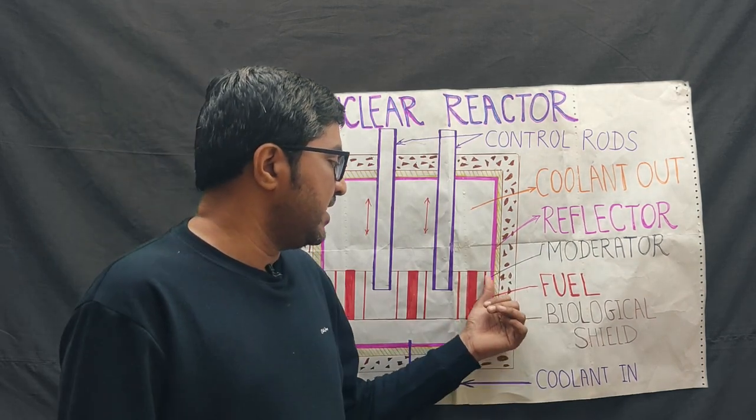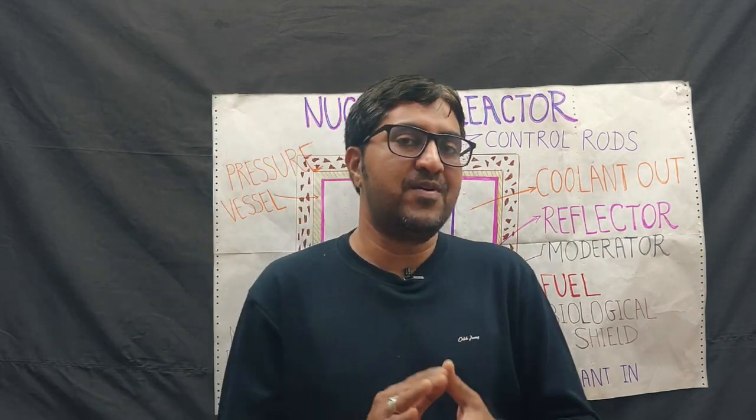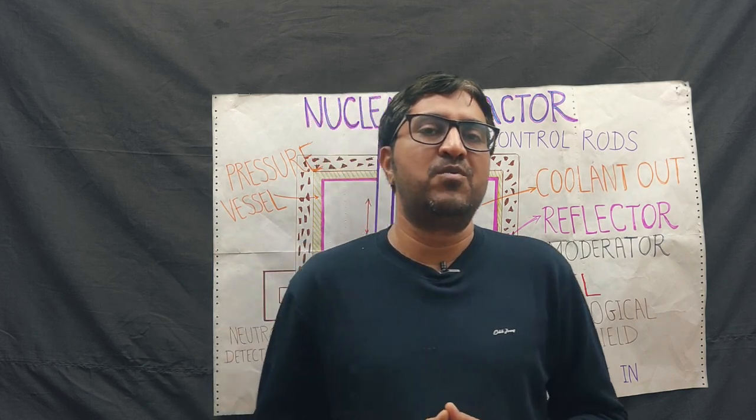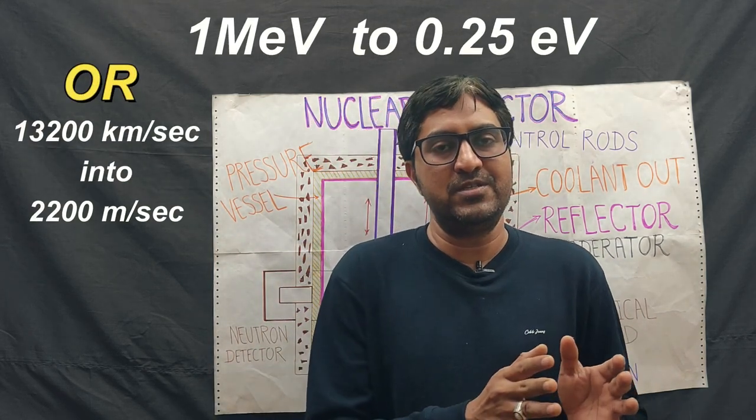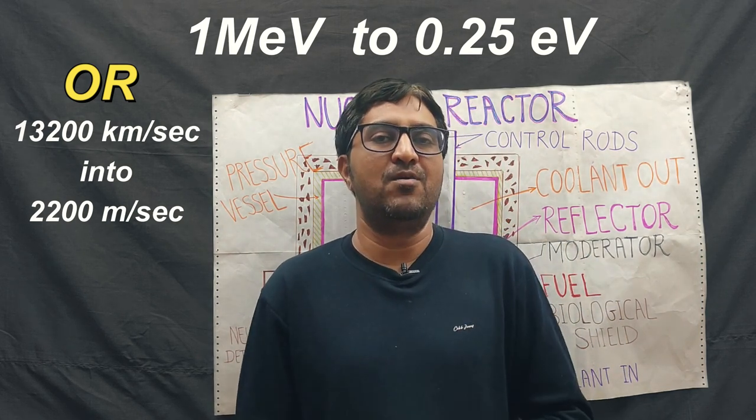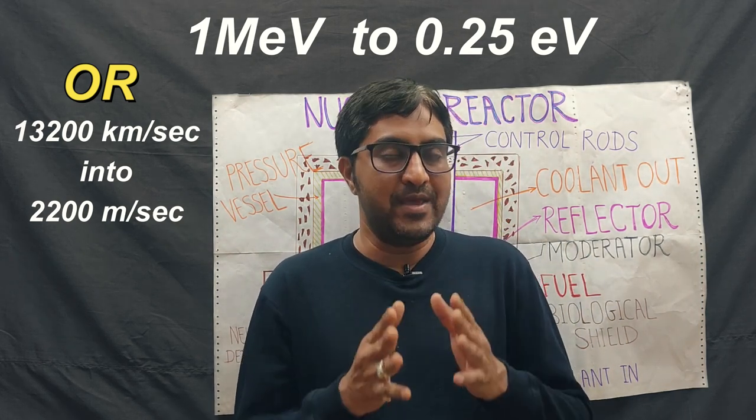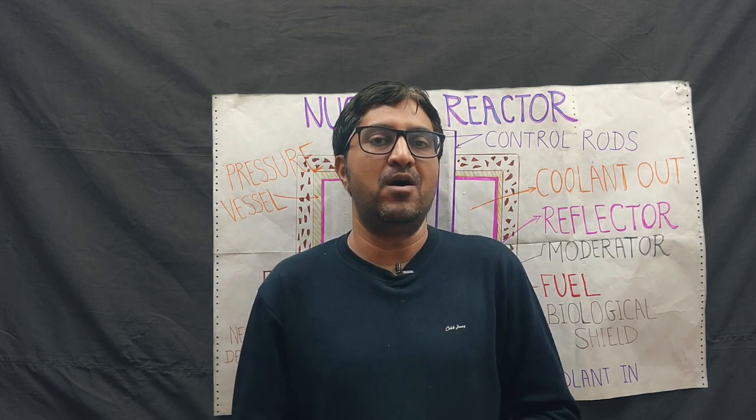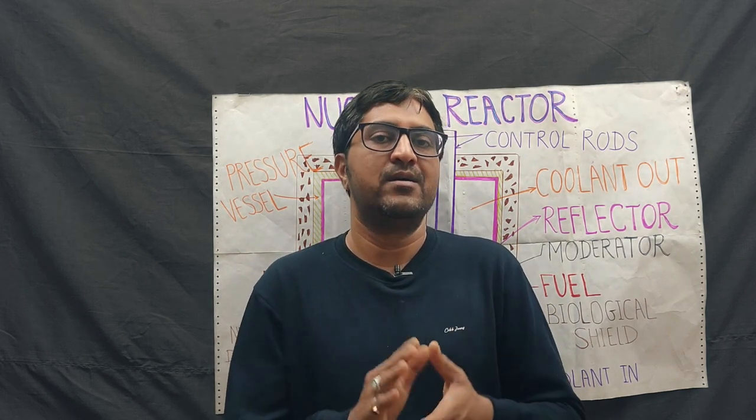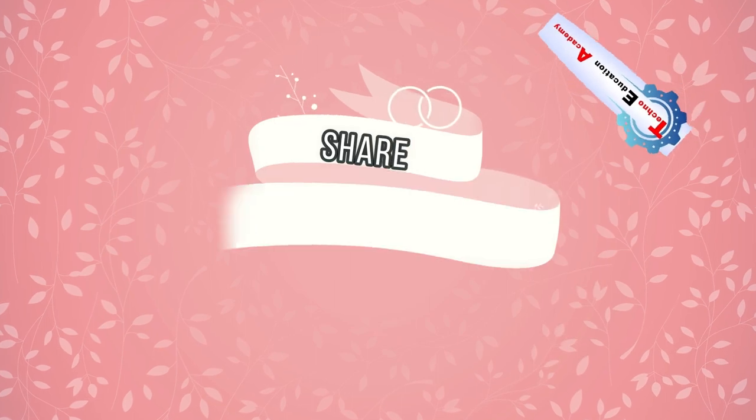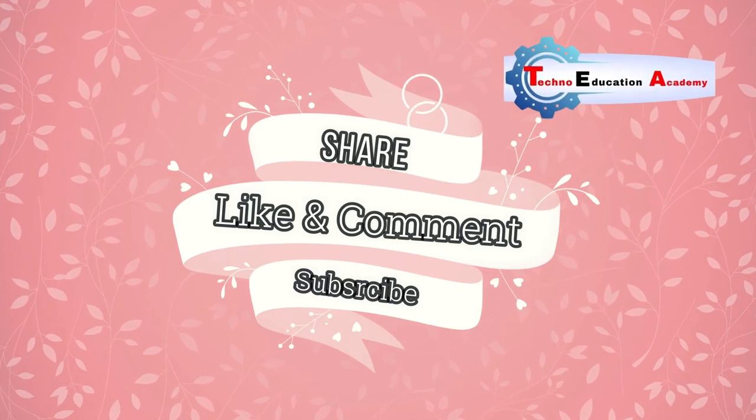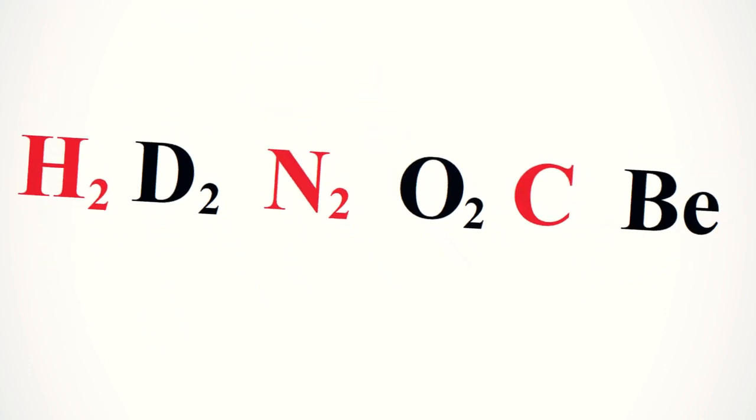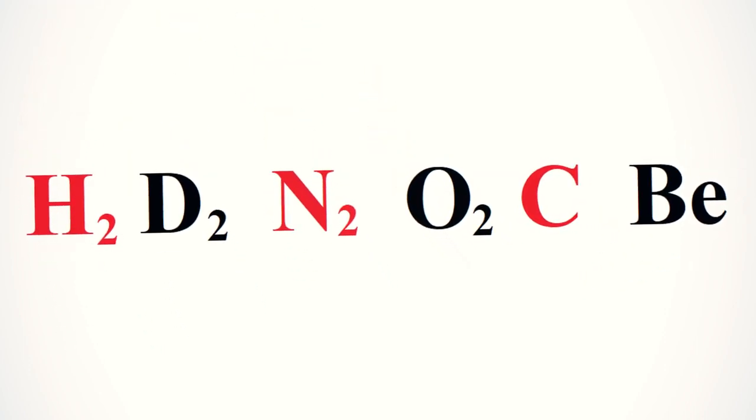The next component is moderator. The function of moderator is to reduce the velocity of fast neutrons into slow neutrons, so the function of moderator is to increase the probability of nuclear fission reaction.